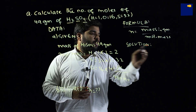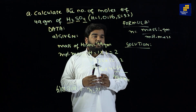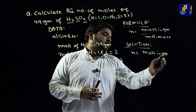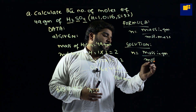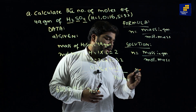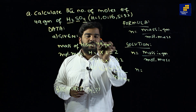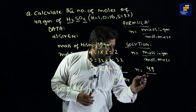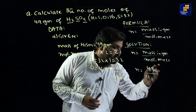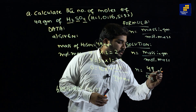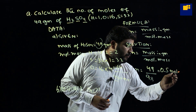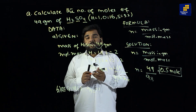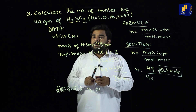Solution mein better presentation ke liye formula ek martaba phir repeat karte hain: n = mass in grams / molecular mass. Mass in grams diya gaya hai 49, molecular mass aapne calculate kiya tha 98. To n = 49/98. Jab aap calculator mein divide karte hain to answer aata hai 0.5 moles. Is answer ko box mein bana lenge — yeh hamari behtareen presentation hogi.